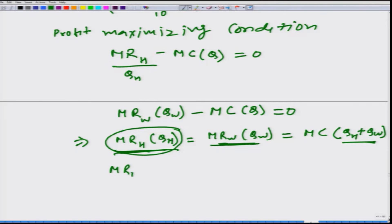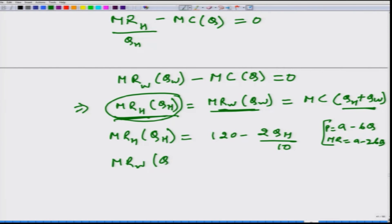Let us calculate how much is MRH. This is going to be 120 minus 2 QH by 10. By now, we are familiar that when we start with demand function A minus BQ, then the MR comes out to be A minus 2BQ. This is the formula I have used. What is going to be the marginal revenue in the world market? At all level it is fixed at 80, because it does not matter how many units this firm sells, the market price remains equal to 80. How about the marginal cost? Marginal cost at Q is already given, which is 50 plus Q by 10 and if we write Q equals QH plus QW, this is the formulation we get.